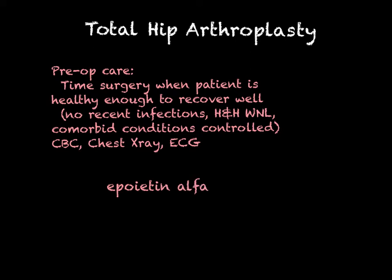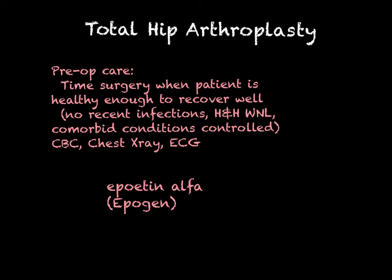Epoetin alpha, also known as Epogen, is something that can get hemoglobin and hematocrit up quickly if needed. It's something a surgeon might use if concerned about a patient's status prior to surgery when they don't have time to wait for anemia to be well controlled. Note: this is not likely to be on your exam.